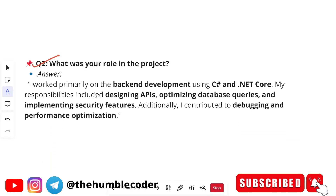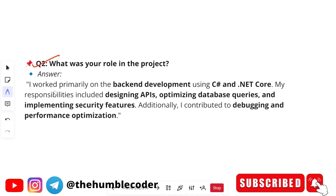The next question is: what was your role in the project? In college, the majority of people make projects in groups. If it is a team project, you have to tell what your role was. Or, if you created an individual project, you can just say this project was completely made by me and I took care of all aspects. To answer this as a team member: 'I worked primarily on back-end development using C# and .NET Core.'